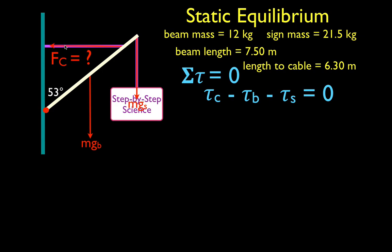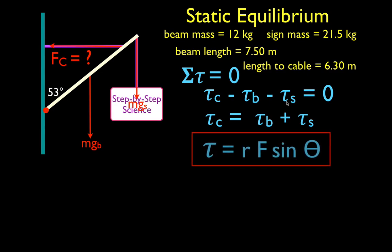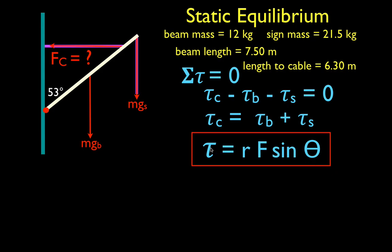The torque from the cable equals the sum of the torque from the beam and the torque from the sign. We're going to use the torque equation: tau equals R times F times sine of theta. For each force, we need to know R — the distance along the radial vector from the axis of rotation to the point of application of the force. We've been given all those distances.